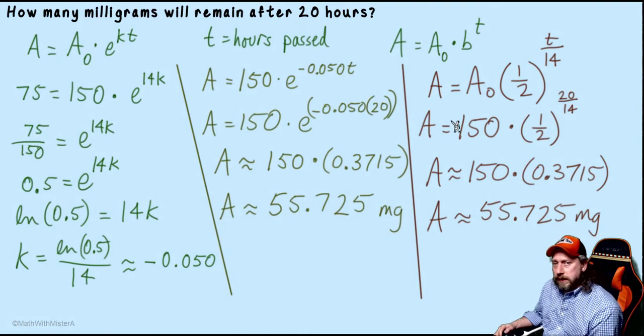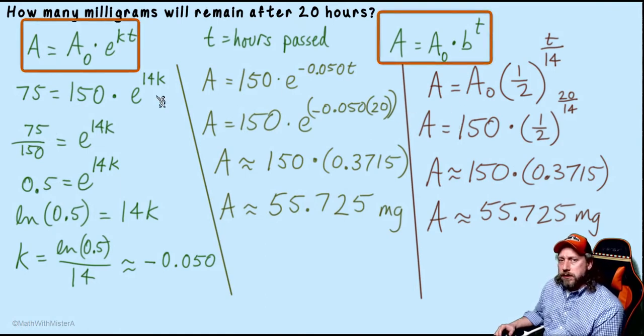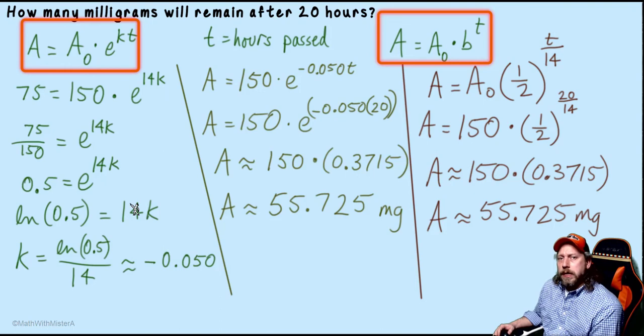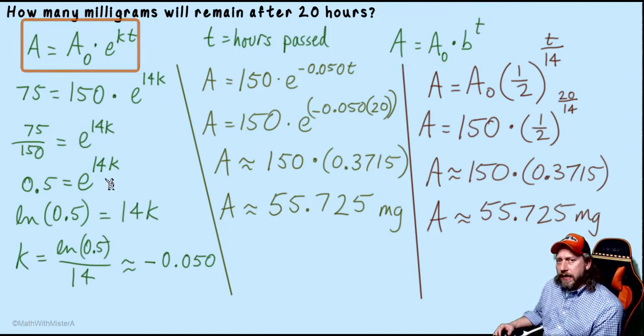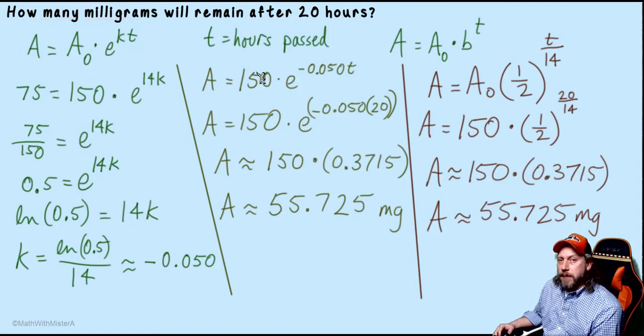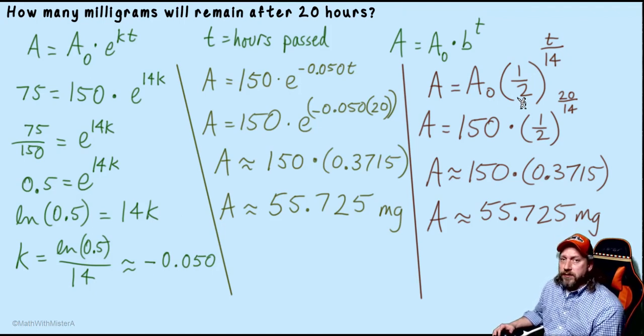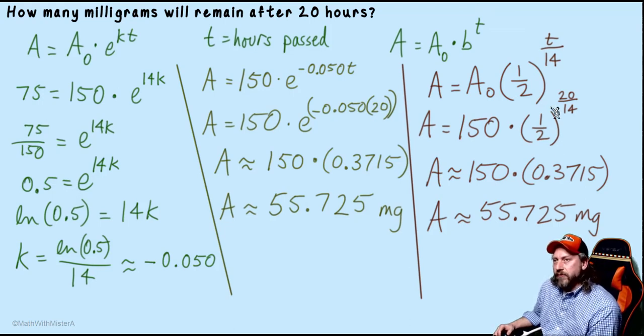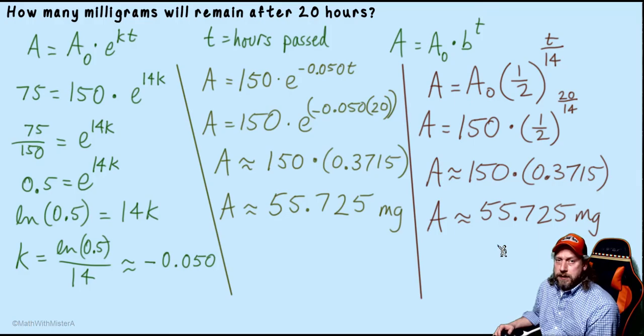To sum up, we've seen that there are at least two different exponential models that we can use as a beginning structure for a model that will answer a question like this. Using base e, we had to first solve for k to be able to complete our exponential model and then use that to answer a question. Using the other exponential expression, we needed to be able to see what was a base that we could use for this exponential change. And in this particular problem, given that we started at 150 and ended at 75 after 14 hours, that was kind of an apparent cutting in one-half, which could lead us to use this other exponential model to answer the question.